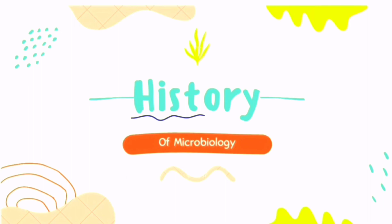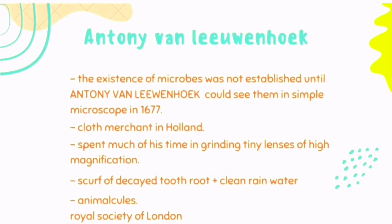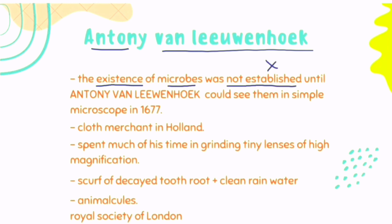Next, the history of microbiology. In the history of microbiology we will discuss scientists, their inventions, theories, and discoveries. One of the important scientists is Antony van Leeuwenhoek. The existence of microbes was not established until Leeuwenhoek could see them in his simple microscope, which consists of one lens.